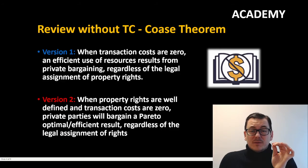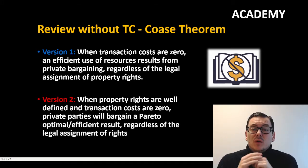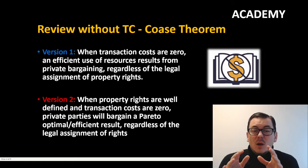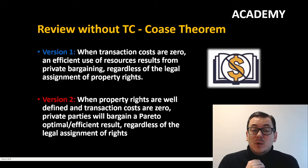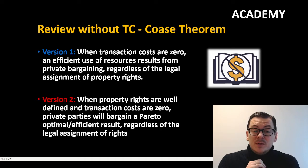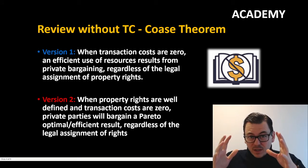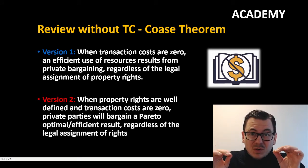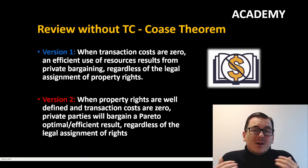First we will have to look at the Coase theorem without any transaction cost. The Coase theorem stipulates that when transaction costs are zero, an efficient use of resources results from private bargaining regardless of the legal assignment of property rights. Or in another version: when property rights are well defined and transaction costs are zero, private parties will bargain to a Pareto optimal efficient result regardless of the legal assignment of rights. The key focus here is that transaction costs equal zero, meaning we can bargain between private parties without any cost.